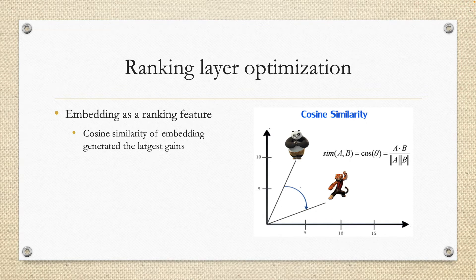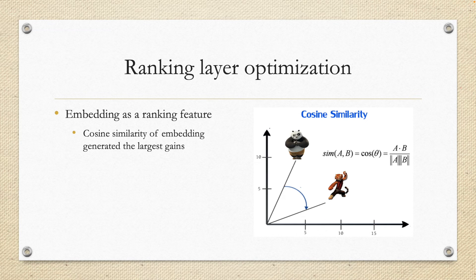Besides retrieval layer optimization, ranking layer optimization is also used. The embedding calculated in the retrieval layer can also be used as ranking features input into the ranking layer. Embedding is a feature of the retrieval layer, and it can also be a ranking feature. Here, it uses the cosine similarity of the embedding, and results showed that this similarity gives the largest gains.